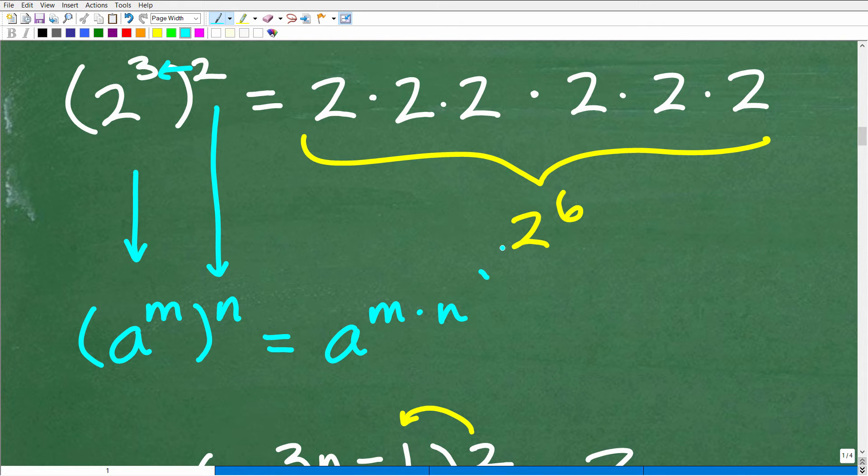What we saw: this is two times three, that's how we got six. So the answer or the property is a to the m to the n power is equal to a to the m times n. So this is actually the formal property of exponents that you need to remember.